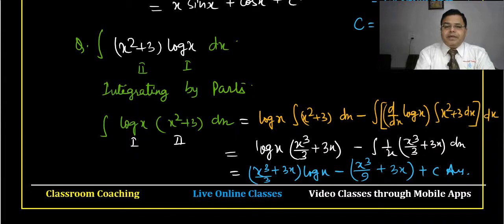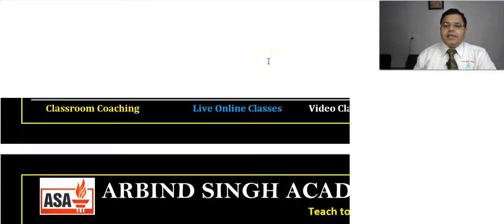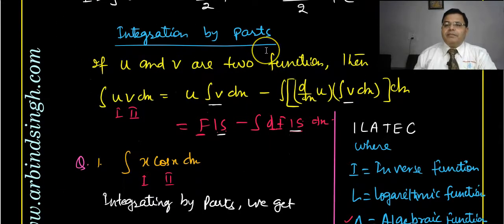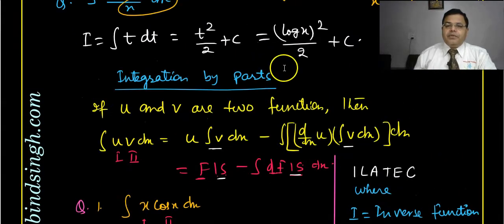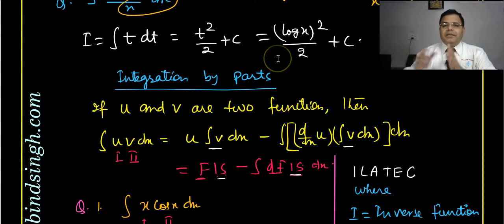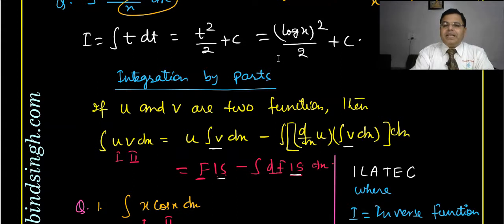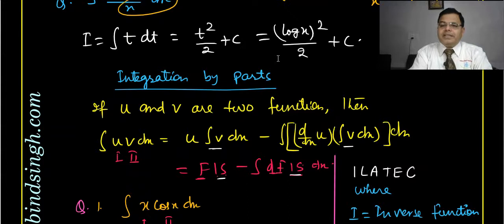So the basic methods for indefinite integration are: method of transformation, method of substitution, and integration by parts. I have discussed all of them one by one. In physics, there will be small applications of integration, and this indefinite integration concept will also be useful in definite integration, which we will discuss next.